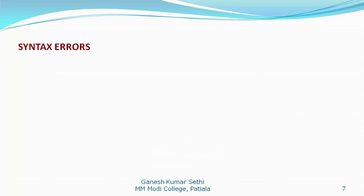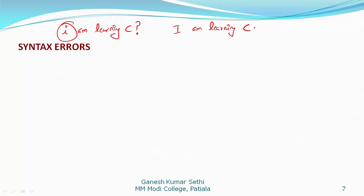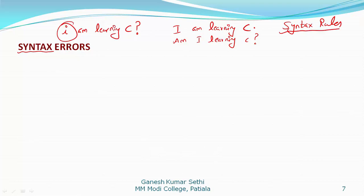First is the syntax error. Before defining syntax error, let me take the example of the English language. Suppose I write the sentence 'i am learning C language?' — you can easily detect that 'I' should be written in uppercase, and because it is an affirmative sentence, there should be a full stop, not a question mark. The correct sentence could be 'Am I learning C?' if a question mark is intended. Similarly, C language has its own set of rules. The rules that are followed in a language are known as syntax rules.